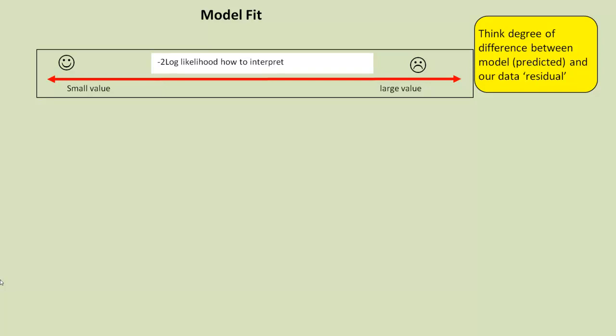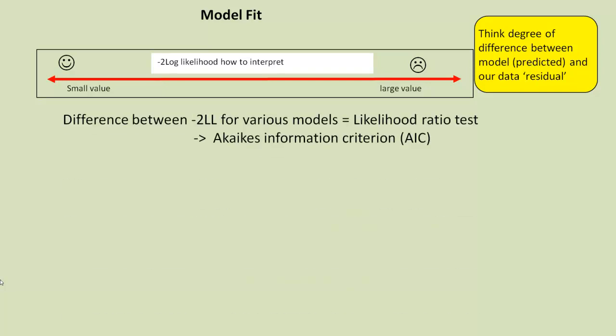The smaller value, the better it is. The larger value, the worse we are. The more discrepancy between the model predicted value and our actual observed values in our data set. You can use these minus 2 log likelihood values to compare various models. Say we had one with two parameters and one with three input variables to compare the difference between them. And when we do that, we carry out what's known as a likelihood ratio test, and this gives us a p-value.